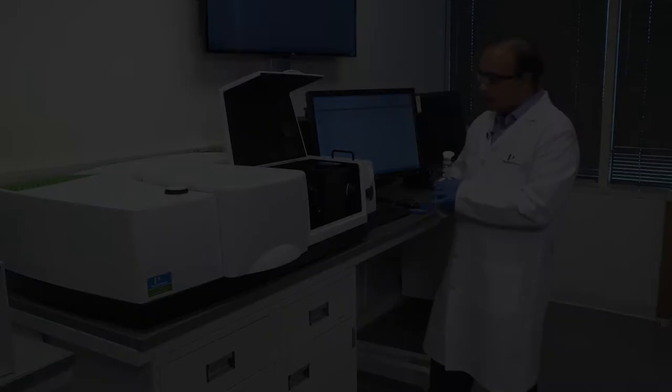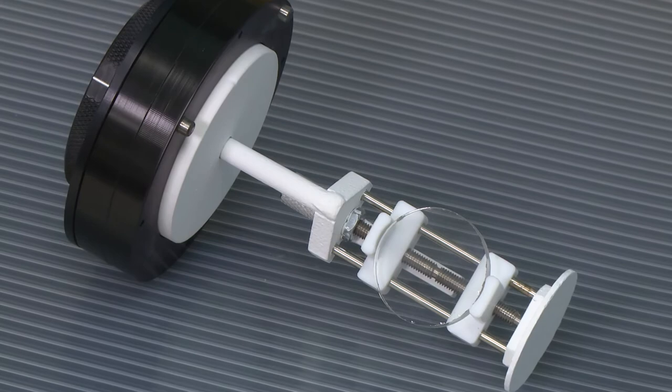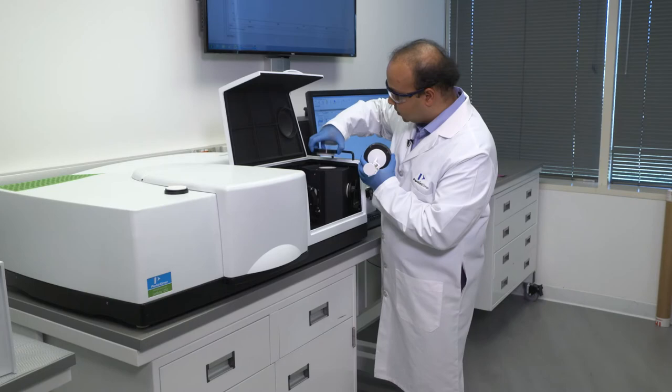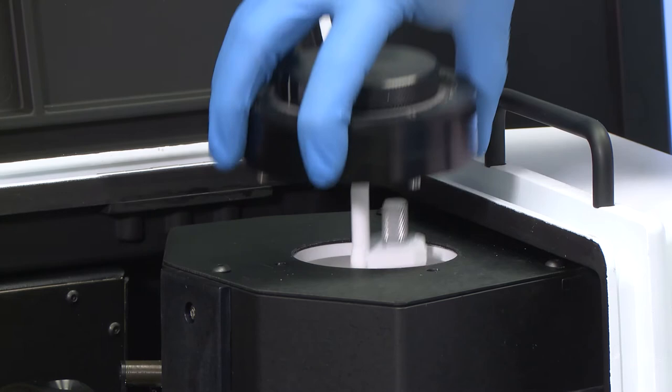Now it is also possible to make measurements inside the integrating sphere. So here is what we call as a center mount accessory with a sample mounted on it. This is what we call as a jaw style accessory that will help clamp the sample in between the two jaws. To make a measurement, we'll remove the top part of the sphere here, and then pretty much drop the center mount accessory right inside the sphere.